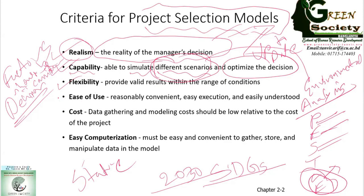The model should not be very complex. The model should be simple, usable, and understandable. It should be usable so that we can easily transmit the operational procedure of the model to each and every employee related to the project. That's why we say it should be reasonably convenient — the execution should be easy, and for team members the model should be easy to understand.